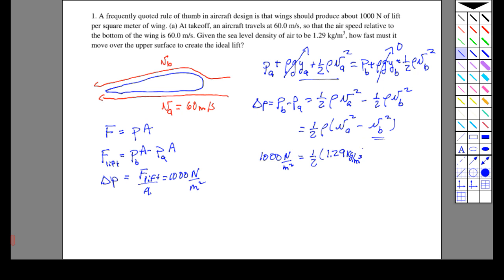We know V_A is 60 meters per second, and we're squaring that. We want to get our hands on V_B.